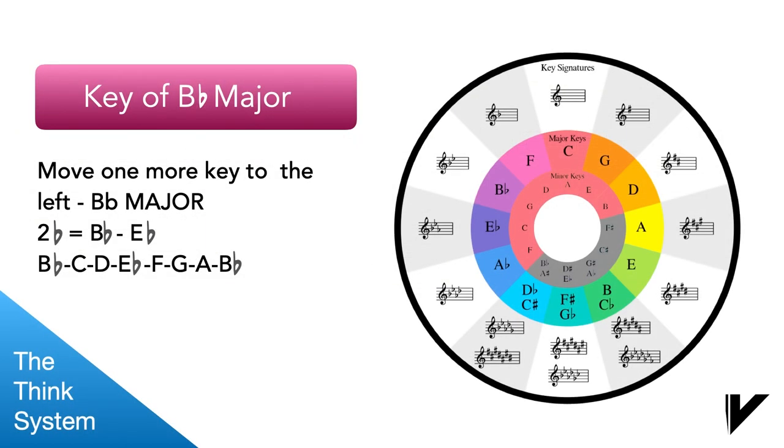So let's do one more flat key together. Let's do the key of B flat major together just to make sure you understand how this works. Now we're going to start on the note B flat and we're going to go up alphabetically through the musical alphabet. But because we know the key of B flat has two flats, and that when you have two flats, they are B flat and E flat, when we get to B, we'll say flat. When we get to E, we'll say flat.